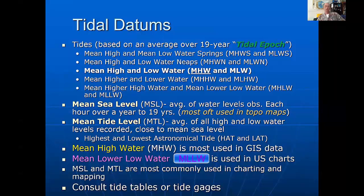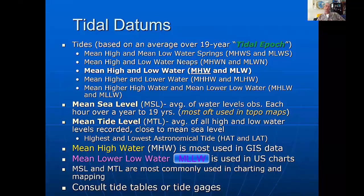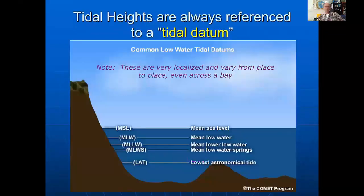You will typically tend to see mean high water — the average of the high tides, MHW — in GIS and topographic kinds of datasets and maps. Whereas you'll see mean lower low water, MLLW, on nautical charts. So it's important to know what you're looking for and how to interpret your map accordingly.